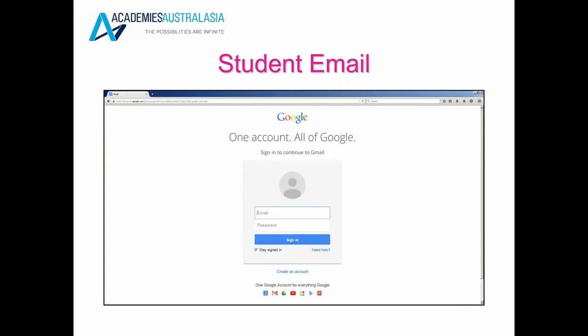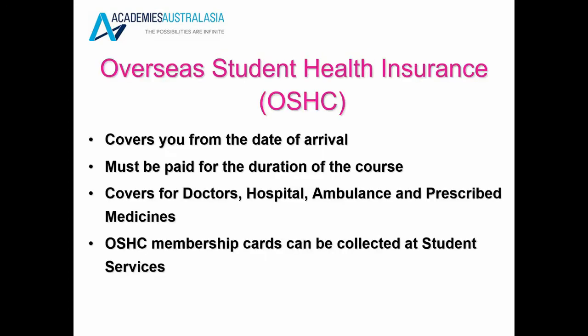This is the platform where you can log in to your Academies Australasia email. You will have an email address set up for you and a password, which will be provided with instruction on how to access your email address and your email inbox. Please access your emails regularly for communication from the college to you.